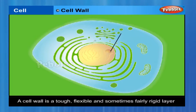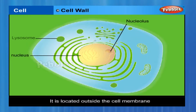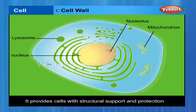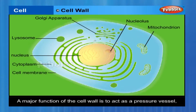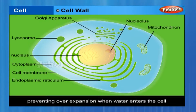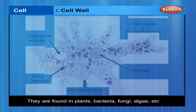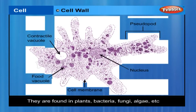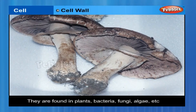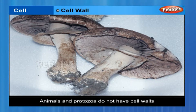A cell wall is a tough, flexible and sometimes fairly rigid layer that surrounds some types of cells. It is located outside the cell membrane and provides structural support and protection, and also acts as a filtering mechanism. A major function of the cell wall is to act as a pressure vessel, preventing over-expansion when water enters the cell. They are found in plants, bacteria, fungi, algae and some archaea. Animals and protozoa do not have cell walls.